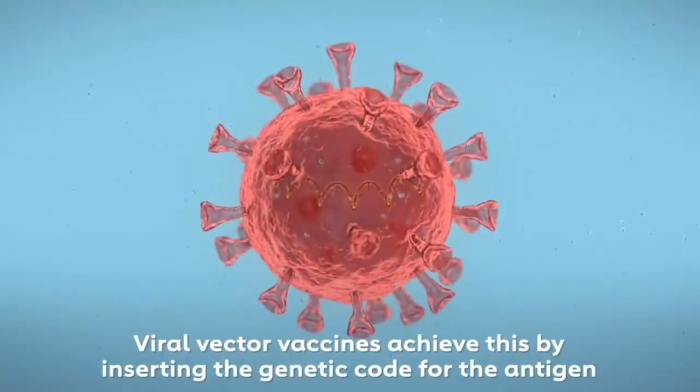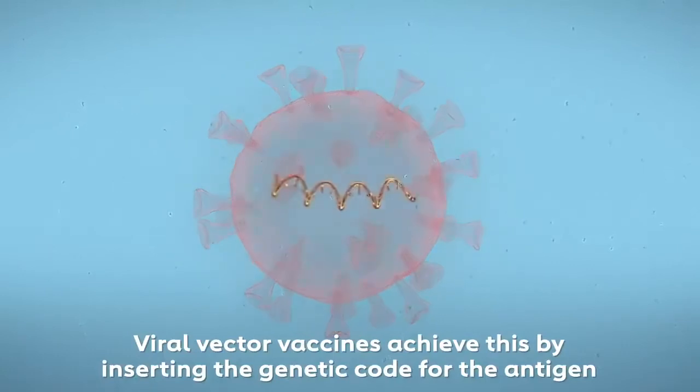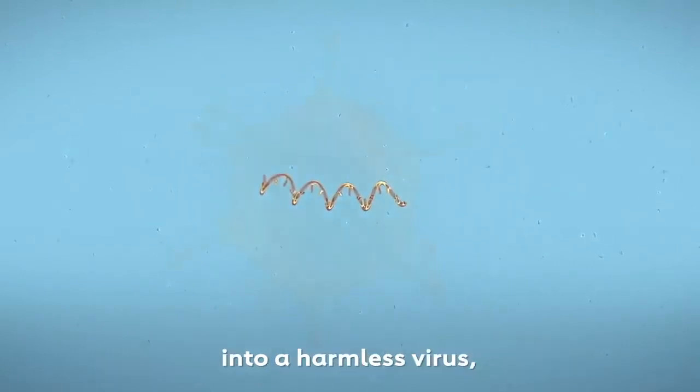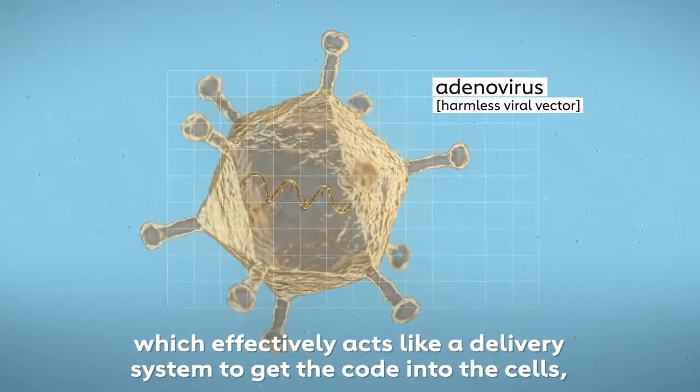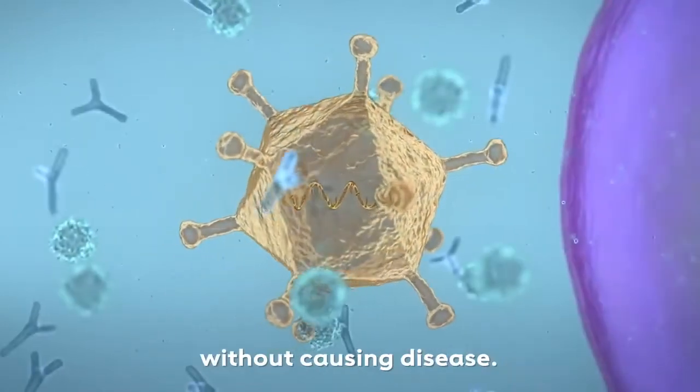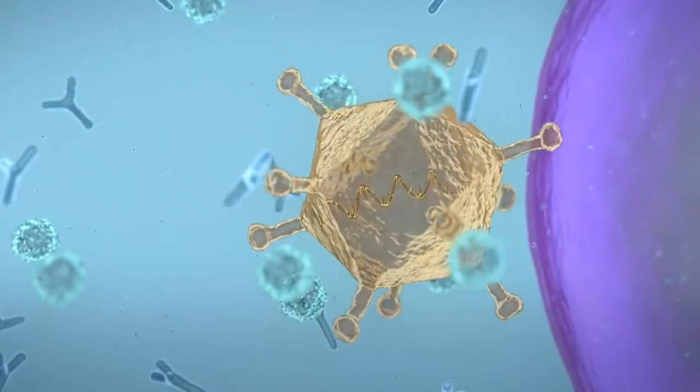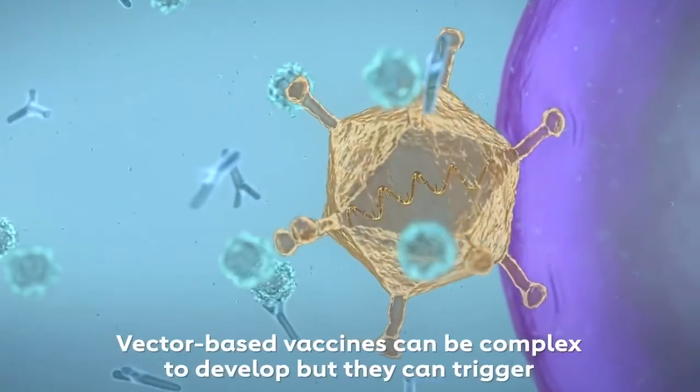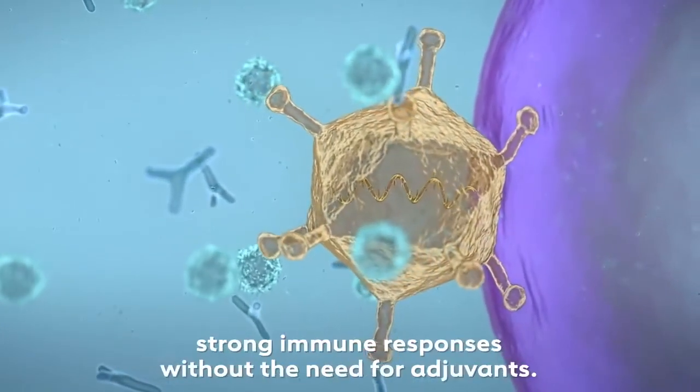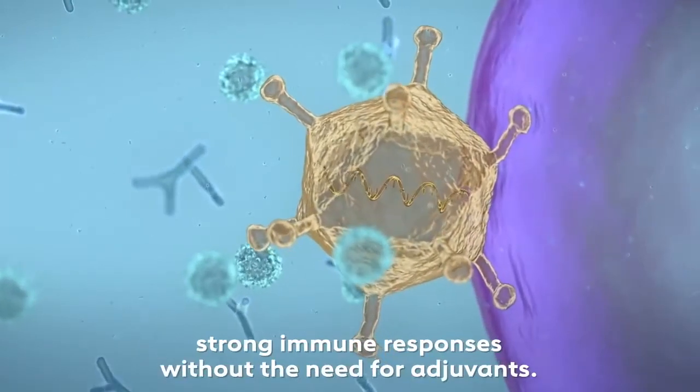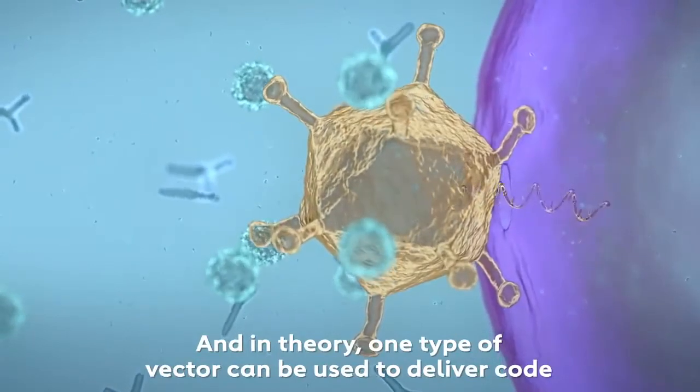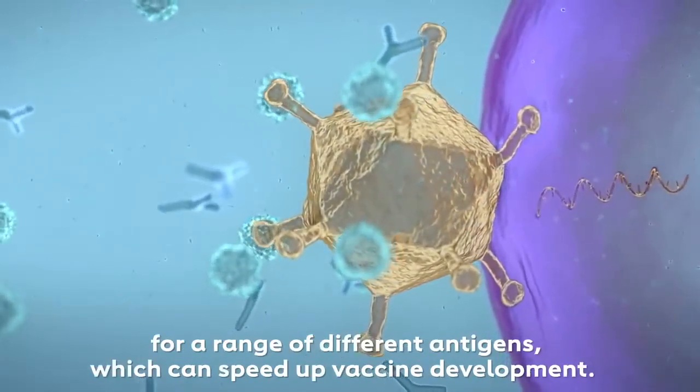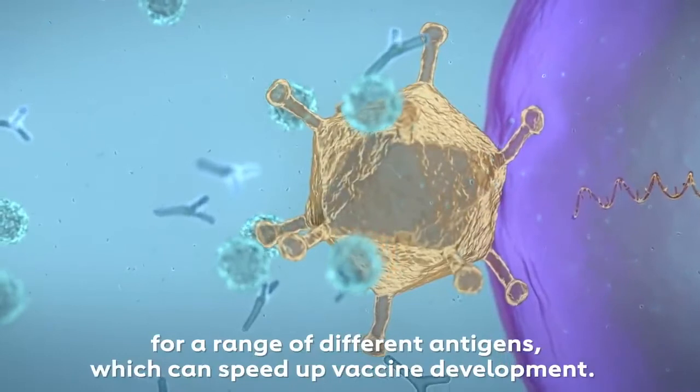Viral vector vaccines achieve this by inserting the genetic code for the antigen into a harmless virus, which effectively acts like a delivery system to get the code into the cells without causing disease. Vector-based vaccines can be complex to develop, but they can trigger strong immune responses without the need for adjuvants. And in theory, one type of vector can be used to deliver code for a range of different antigens, which can speed up vaccine development.